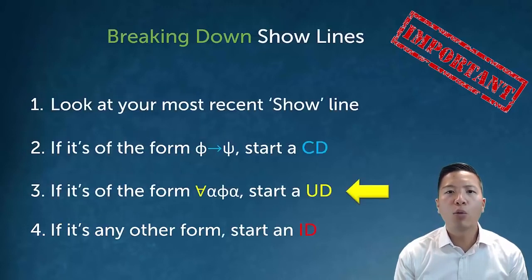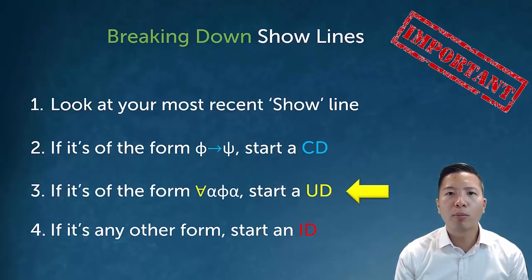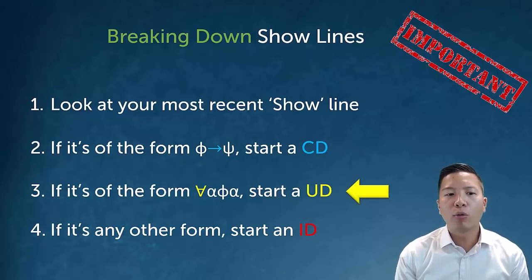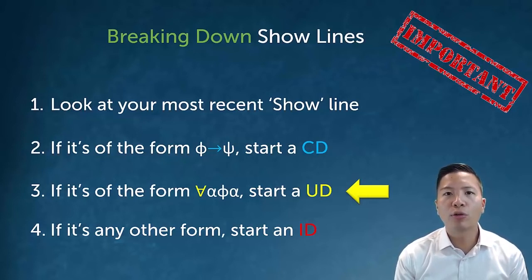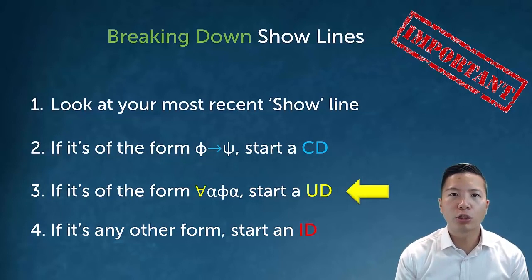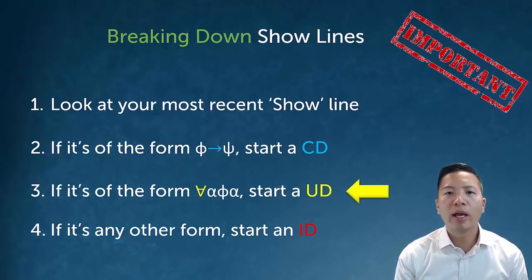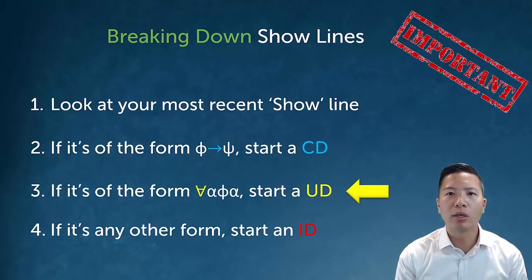Because we have a new derivation type, we have a new way of breaking down show lines. The breakdown is the same except we add another condition. Originally: if it's a conditional, start a conditional derivation; if it's anything else, start a reductio. Now we add: if it's a universal, start a universal derivation, which means showing the instantiated form of the universal. And then if it's neither of those two, we do an indirect derivation.